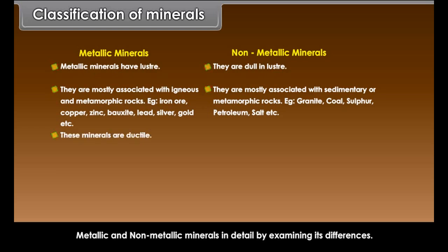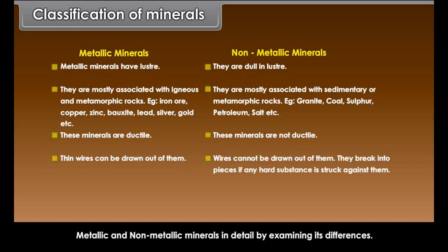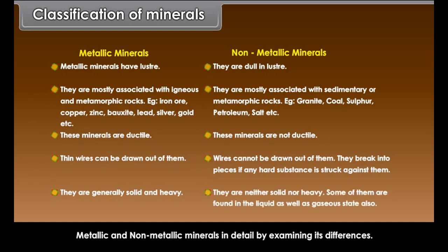Metallic minerals are ductile. Non-metallic minerals are not ductile. Thin wires can be drawn out of metallic minerals. Wires cannot be drawn out of non-metallic minerals. They break into pieces if any hard substance is struck against them. Metallic minerals are generally solid and heavy. Non-metallic minerals are neither solid nor heavy. Some of them are found in the liquid as well as gaseous state also.